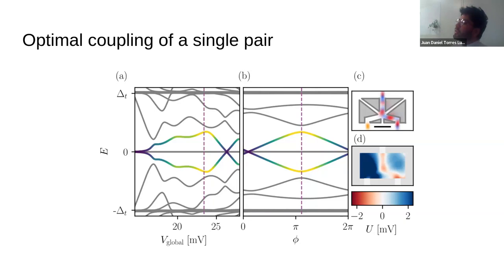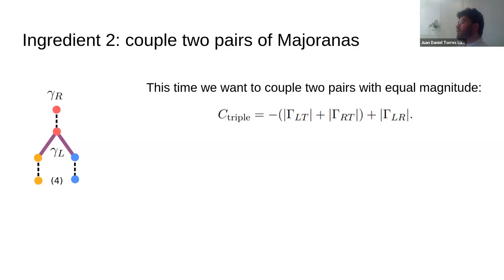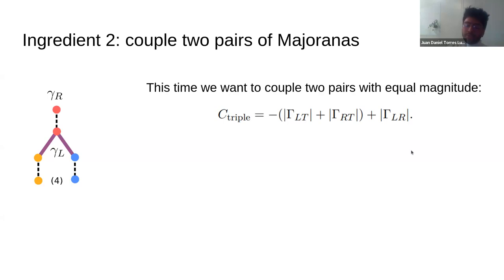This is one of the ingredients needed for braiding. The next ingredient is coupling two pairs of Majoranas simultaneously — both pairs need to be coupled at once. The previously found optimal point does not necessarily work for this case, and a new cost function is needed. The goal of this new cost function is to equalize the coupling of the two pairs while minimizing the coupling of the remaining pair. We proceed with an optimization approach and minimize this quantity using computational routines.